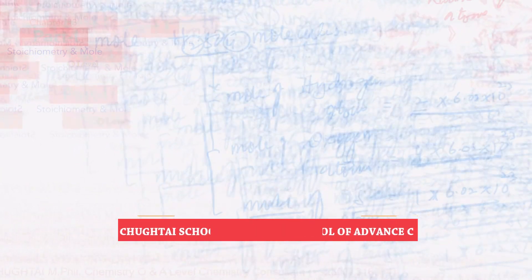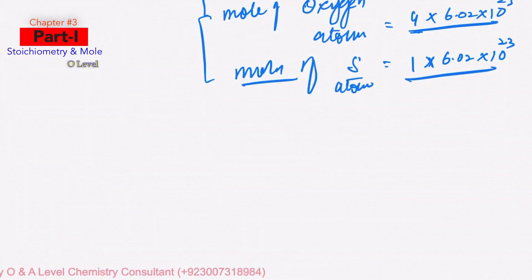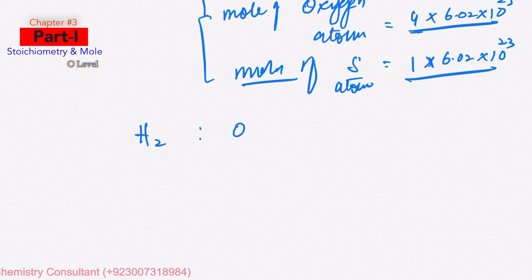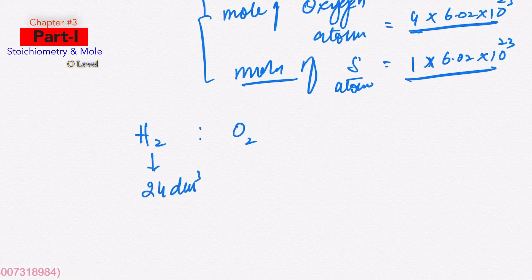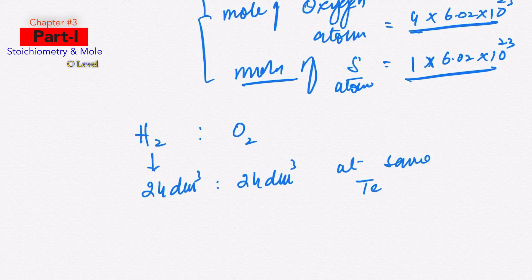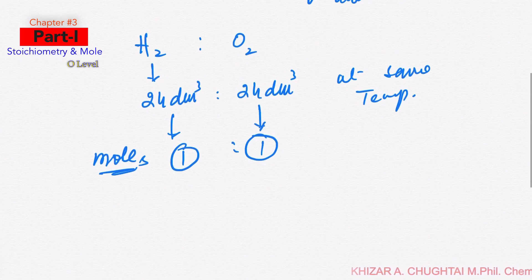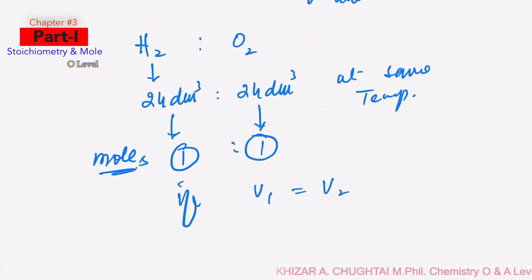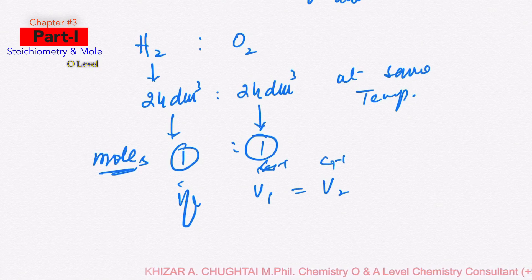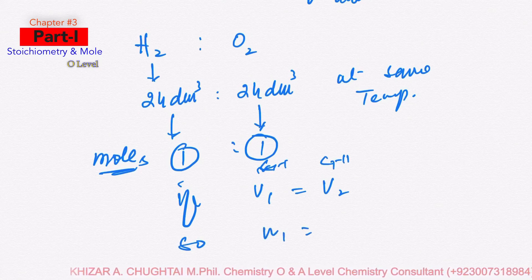The ratio of moles is also equal to the ratio of volumes for gases. For example, comparing hydrogen and oxygen: if both have equal volumes of 24 dm³ at the same temperature and pressure, their moles will also be equal. So if the volume of gas 1 equals the volume of gas 2 at the same temperature and pressure, their moles are also equal.